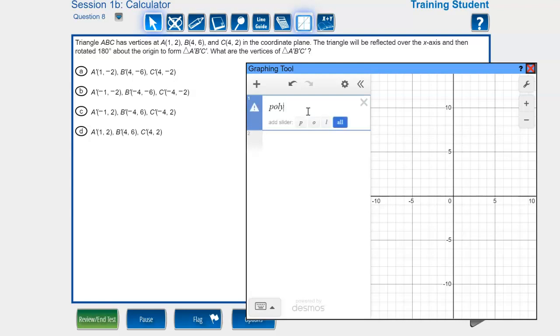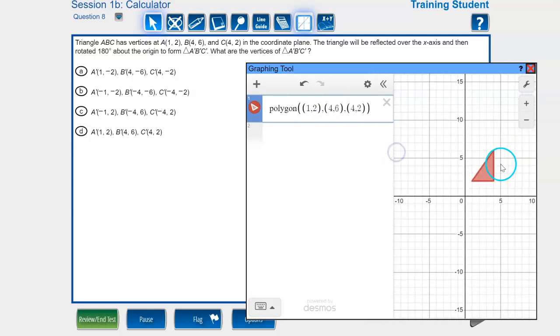The first thing you want to do is type the word polygon and then open parentheses and then open parentheses again and type in the point A. So we're doing A, B, and C in here. So we'll start with 1, 2, close parentheses, put a comma, open parentheses, and then let's type B. And then close parentheses, put a comma, and then open parentheses, and then let's do C. Alright, and you will notice right away it has created this nice little triangle for us.